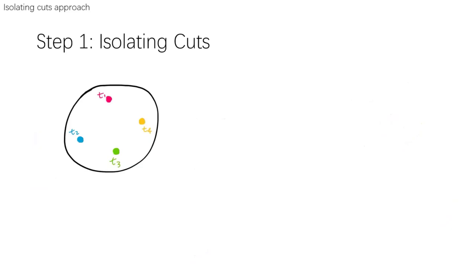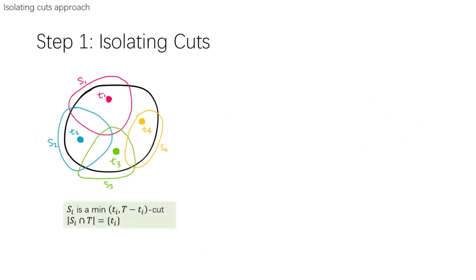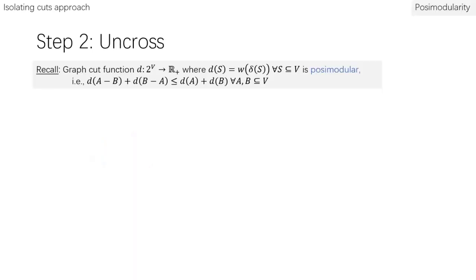In step one, compute S_i, the min t_i isolating cut — the only terminal present in S_i is t_i. These k sets could overlap, and since multi-way cut requires a partition, we must uncross them. To uncross, we rely on the submodularity property of the graph cut function: for any two subsets A and B of vertices, the sum of cut values of A minus B and B minus A is at most the sum of cut values of A and B. This can be proved by direct edge counting or by observing that any symmetric submodular function is posimodular.